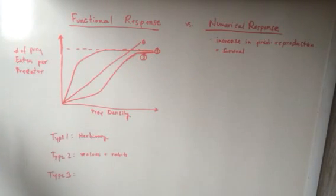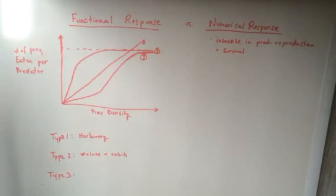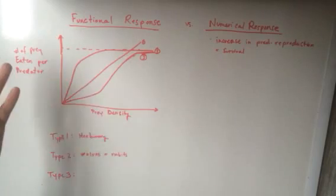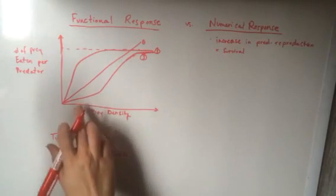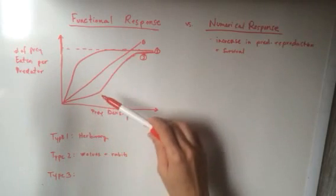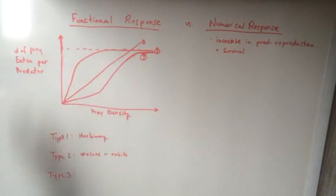This really happens when there's an increase in predators and their search for increasing prey density. So we have this trend in which there's an increase in prey density, increase in search, but then there's also that plateau because of the slow response.